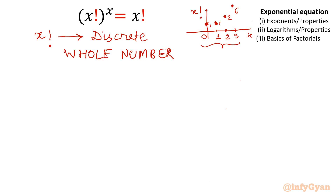Now if you analyze the graph, let us talk about the basics. This is the graph of x factorial. You can see the growth: 1, 1, 2, 6, and so on.